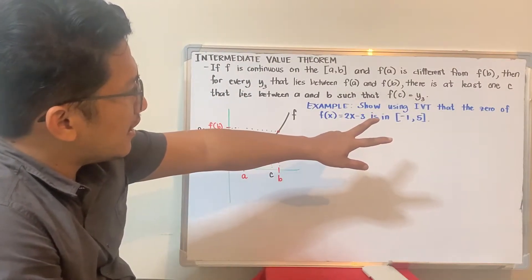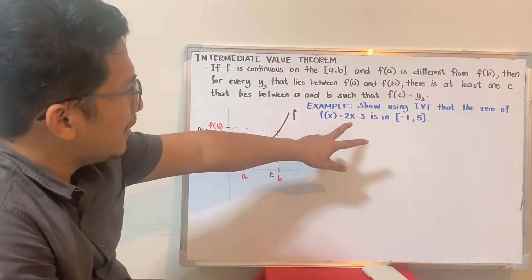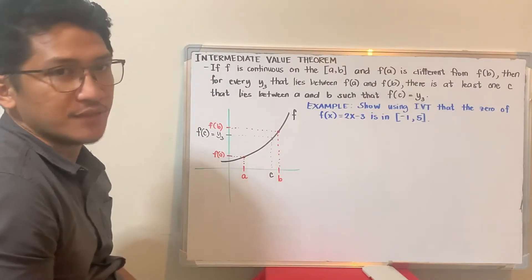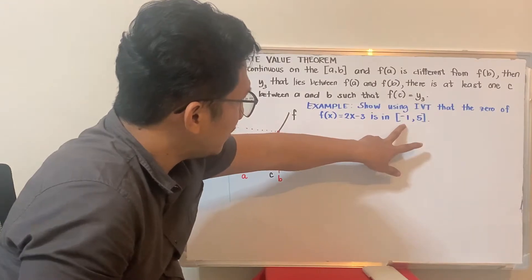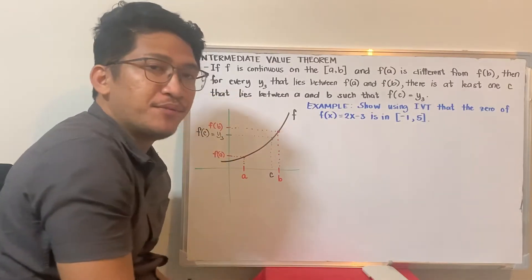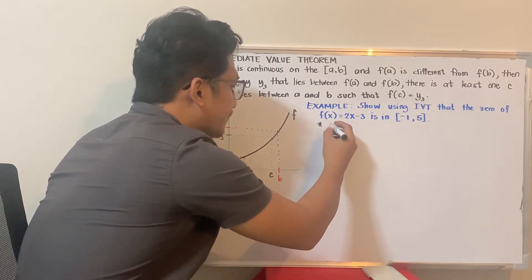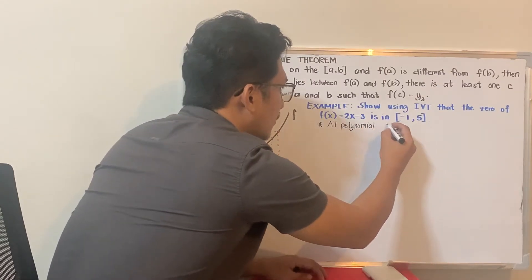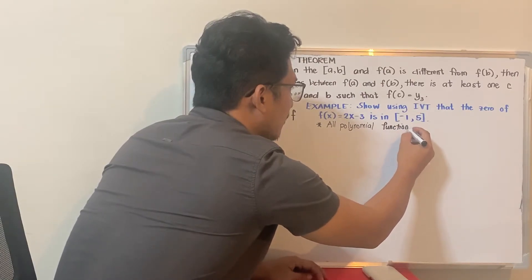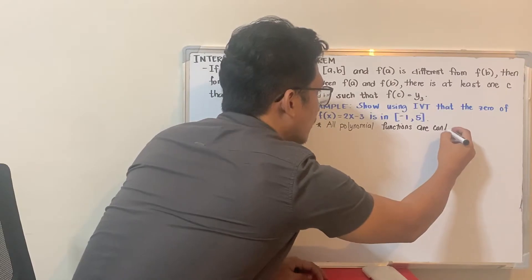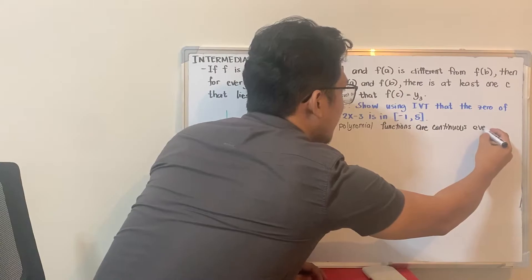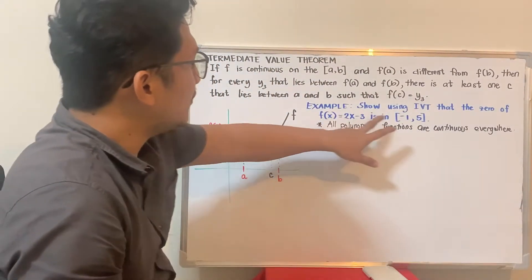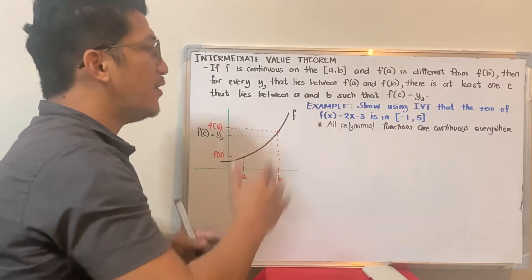Using IVT, show that the zero of f(x) = 2x − 3 is in the closed interval [−1, 5]. First, consider whether the function is continuous on the interval. Obviously yes, because this function is a polynomial function. All polynomial functions are continuous everywhere — so the function is continuous at this closed interval.